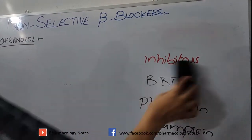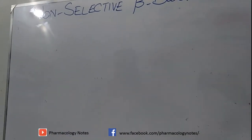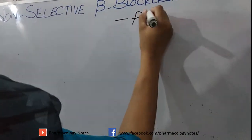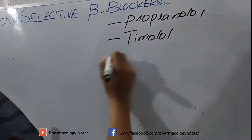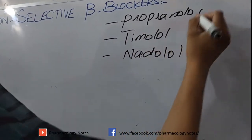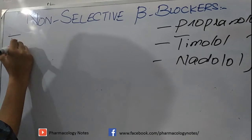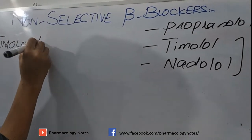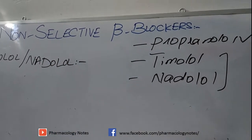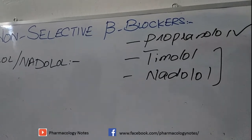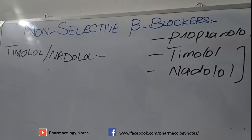We now proceed to the next non-selective beta blocker drugs: timolol and nadolol. Non-selective beta blockers include propranolol, timolol, and nadolol. Timolol and nadolol have mostly the same actions as propranolol because these are also non-selective beta blockers. They are competitive antagonists with equal affinity for both beta-1 and beta-2 receptors.